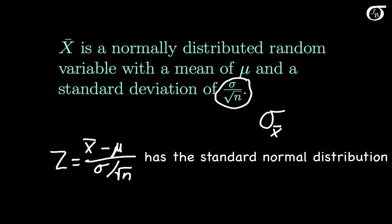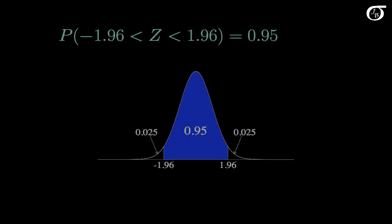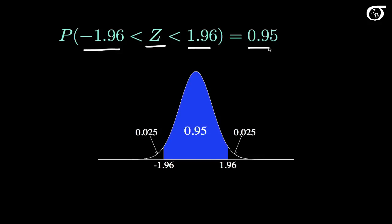Let's recall a couple of features of the standard normal distribution. If z is a standard normal random variable, then the probability that z takes on a value between minus 1.96 and 1.96 is 0.95. In other words, the area under the standard normal curve between minus 1.96 and 1.96 is 0.95, and the remaining area of 0.05 is split evenly into the two tails.